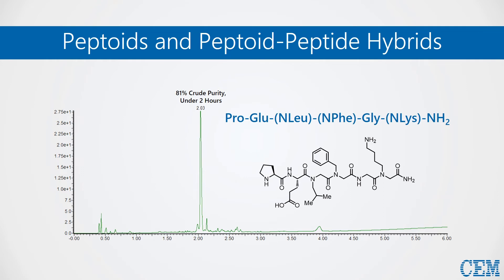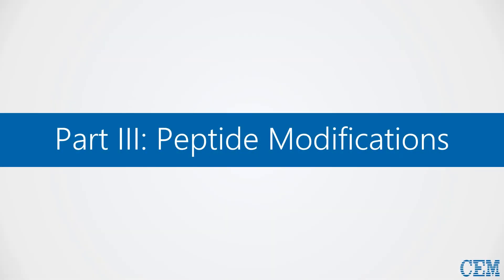Using this approach, we were able to synthesize the peptoid-peptide hybrid displayed here in 81% crude purity in just under two hours. For peptoid monomer incorporation, the resin was first treated with bromoacetic acid and DIC for five minutes at 75 degrees Celsius, then treated with the necessary primary amine for five minutes at 75 degrees Celsius. Incorporation of amino acids upon peptoid monomer installation used four-minute, 90-degrees-Celsius coupling times. PNA monomer incorporation is another peptidomimetic application possible with the Liberty Blue, though omitted here — please email peptide.support@cem.com for more information.